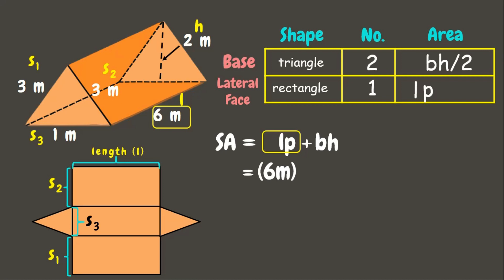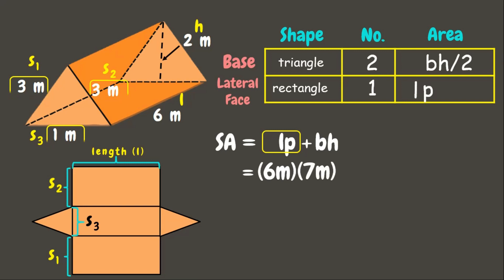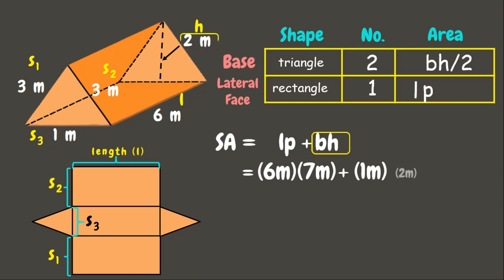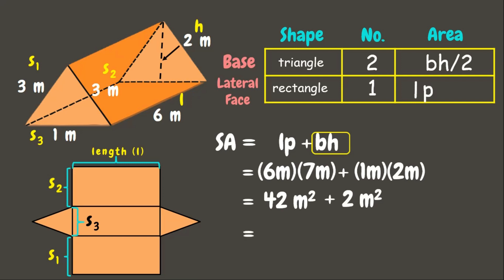Let us solve. First, multiply the length (6 meters) times the perimeter of the triangle. The sides are 3 m + 1 m + 3 m = 7 meters. Then, base × height = 1 meter × 2 meters. So we have 6 m × 7 m = 42 square meters, plus 1 m × 2 m = 2 square meters. Adding the areas together: 42 + 2 = 44 square meters. That is the surface area of this triangular prism.